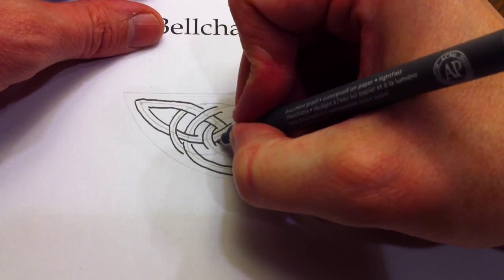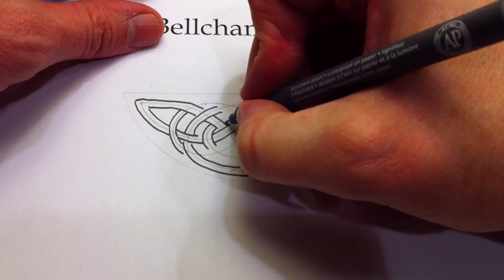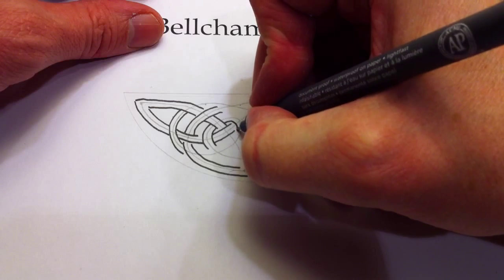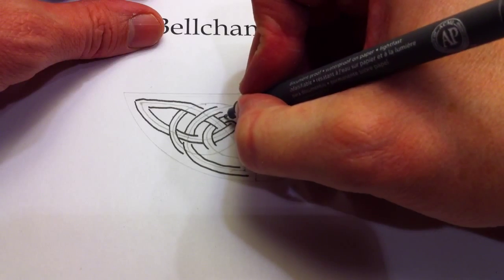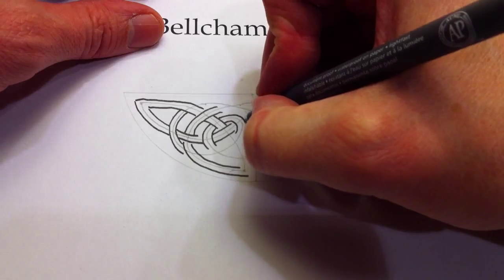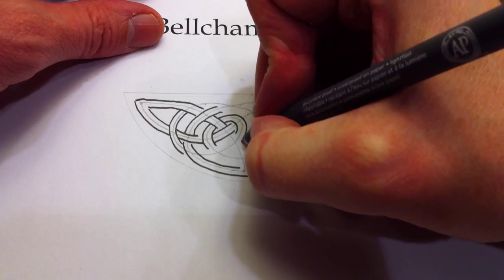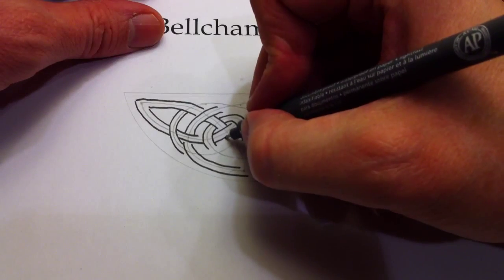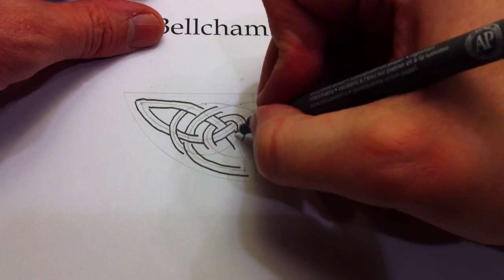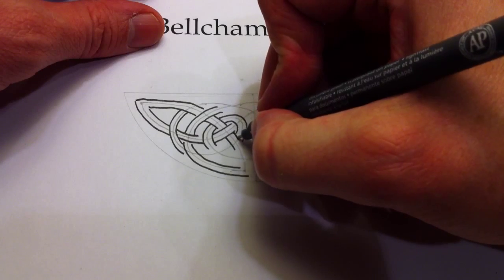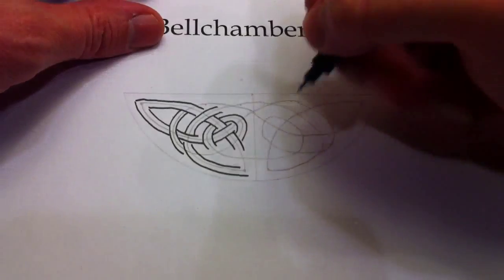Over and under. The Triskel in Celtic designs represents the number three of course. But then when they converted to Christianity it was easily adopted as the Trinity.